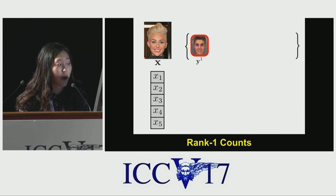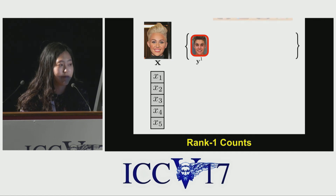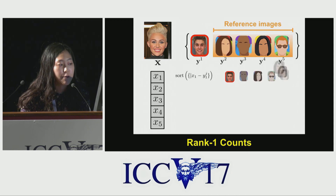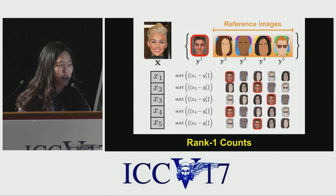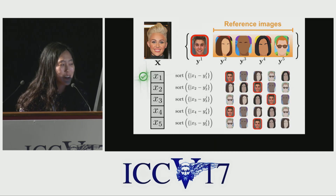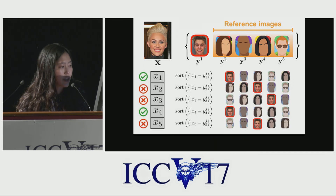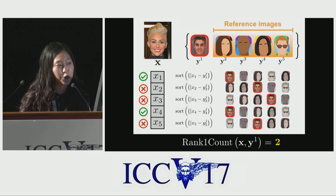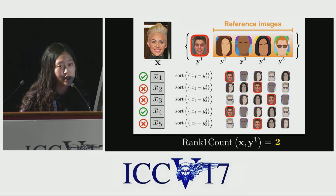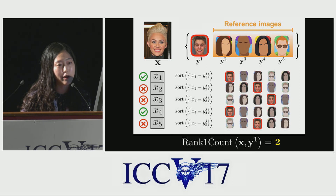We also have some feature vectors for the reference images. On every dimension, feature values are sorted by the nearest to the first image. Then we count the number of feature dimensions in which the second image is the closest to the first image. This Rank 1 Counts helps us achieve a better true positive rate in a very low false positive regime, which eventually makes our clustering performance much better.